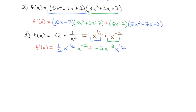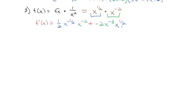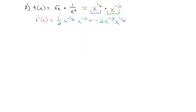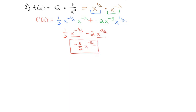We can do a little cleanup in the algebra. We can add exponents: we have 1/2 x to the negative 1/2 + (negative 2) = negative 5/2, and negative 2 x to the negative 3 + 1/2 = negative 5/2. Those are like terms, so 1/2 minus 2 is negative 3/2, giving us negative 3/2 x to the negative 5/2 as a nicely simplified derivative.